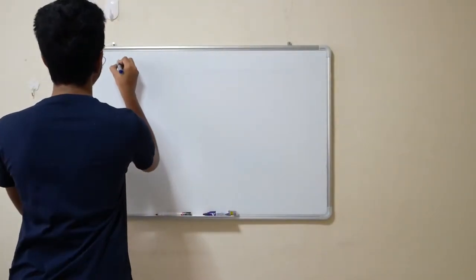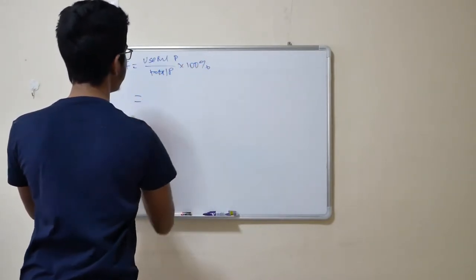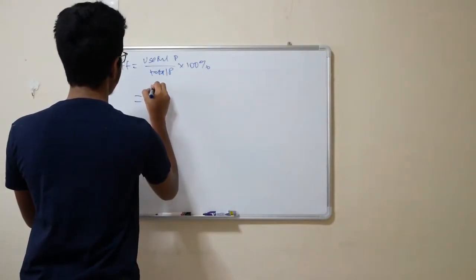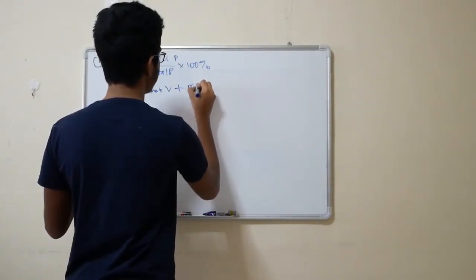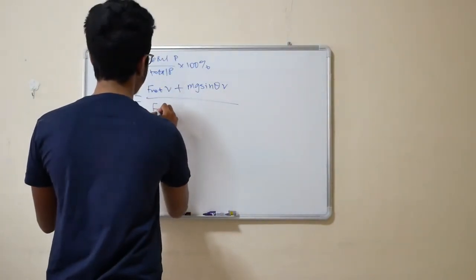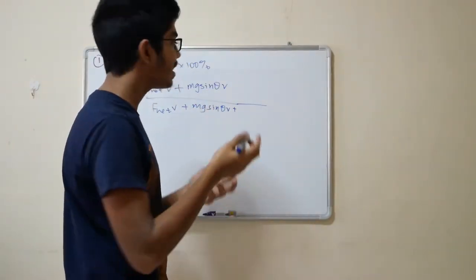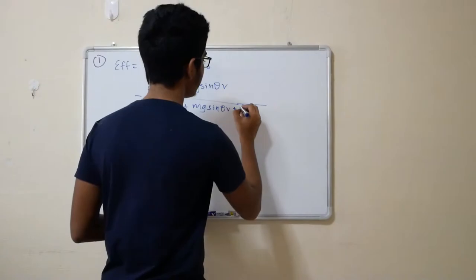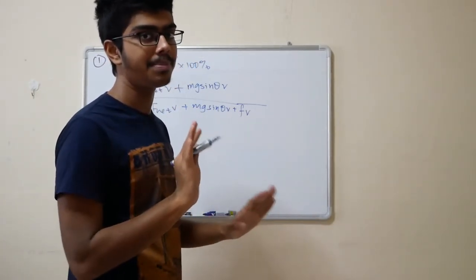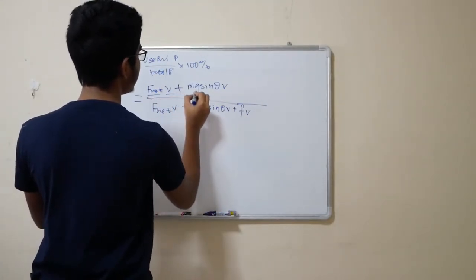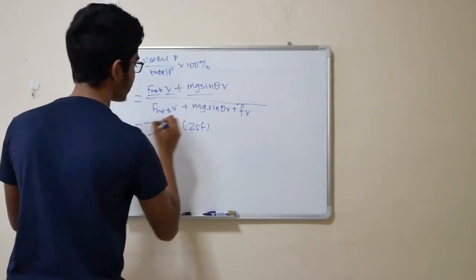Now coming back to the question. Efficiency is useful power over total power times 100%. So you can substitute what we learned. For changing kinetic energy over time, it was F net v. And then there's what other useful power? The change in potential energy over time, which we call mg sine theta v. Then the total power is F net v plus mg sine theta v. But one more thing, the friction. Friction leads to power loss, but it still accounts in total power. The power is conserved. So it will be f times v. F is frictional force, v is velocity. Just substitute it. Now, you guys know F net, you know all this stuff. Your final answer, once you substitute everything, you'll get 76% to two significant figures.